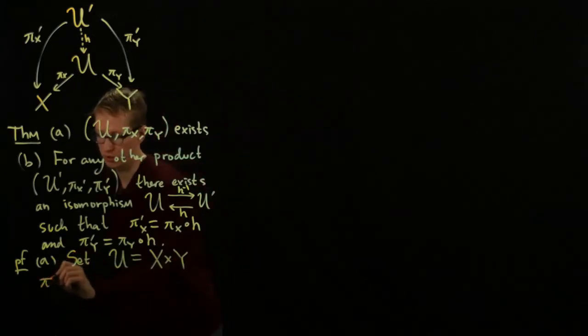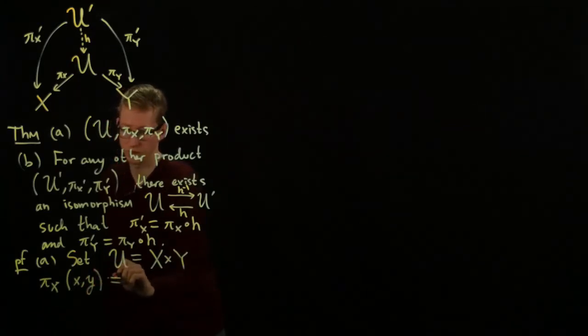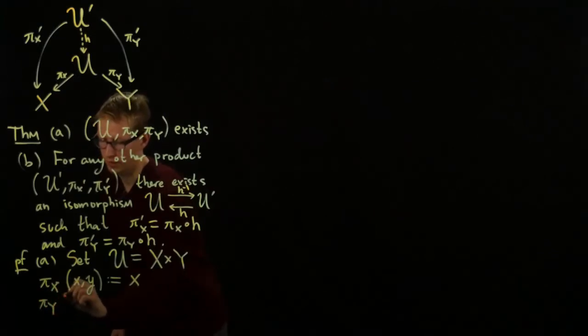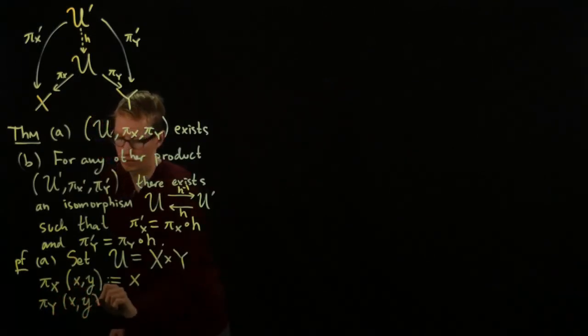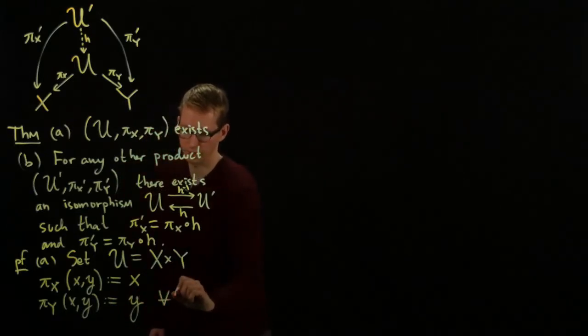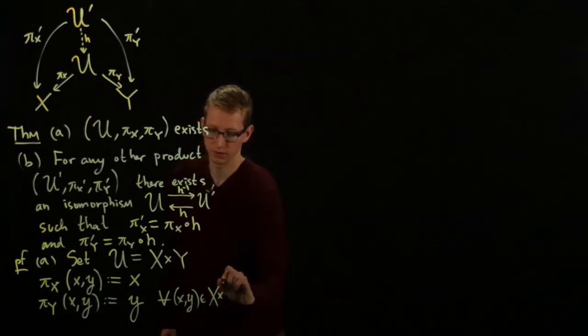And we can also set the projection, πX, of two elements, X, comma Y, to be just the first component. And similarly, πY of X comma Y should be the second component. For all X, Y, in X cross Y.